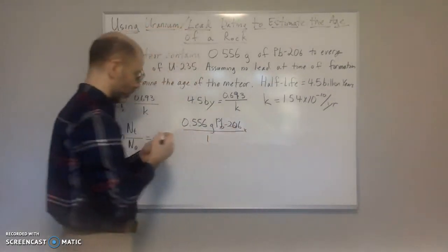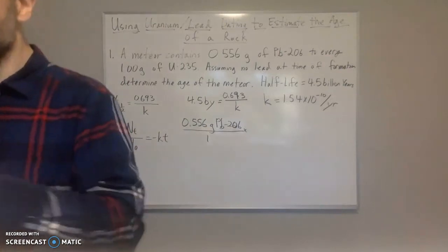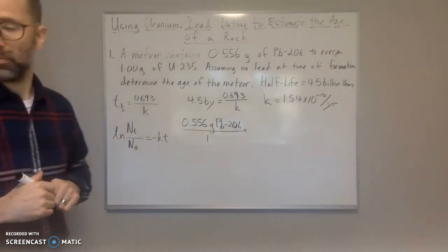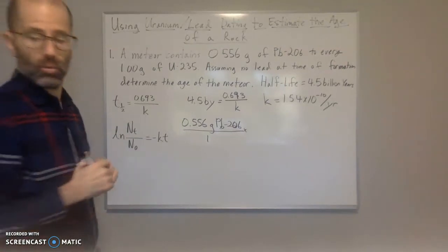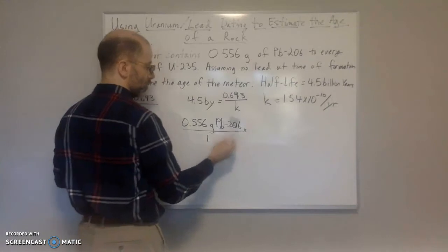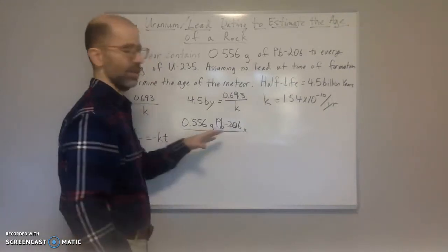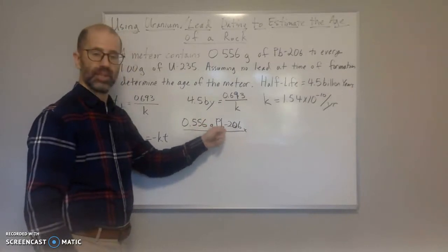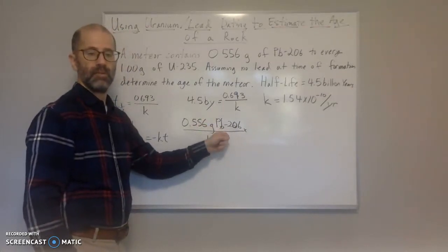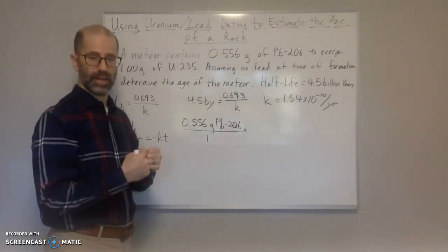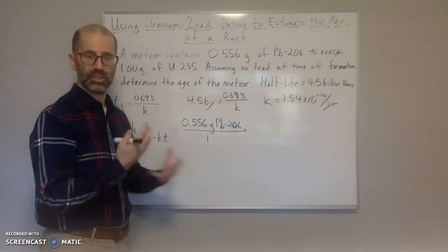What we need to do is we need to take this amount, so 0.556 grams of lead-206 over 1, and we're going to have to use molar mass to convert. So the molar mass, here, we'll just use the 206. Here, we don't want to use the average atomic mass because we're dealing specifically with this isotope here.